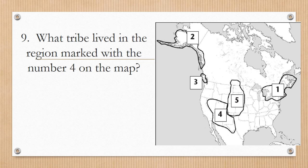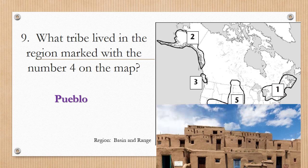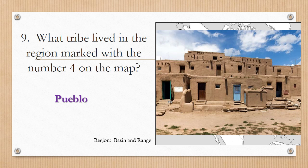Number nine: what tribe lived in the region marked with the number four on the map? This region would be the basin and range region. Did you say the Pueblo? If so, you are correct. Remember that this term has multiple meanings — in question nine we used Pueblo to reference a certain tribe or people group, but we can also use Pueblo to describe multi-storied adobe houses made out of clay.